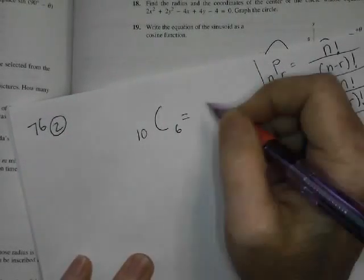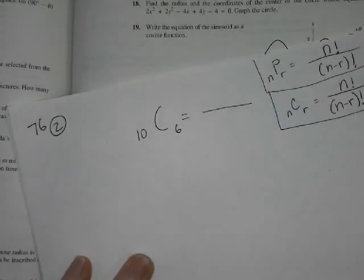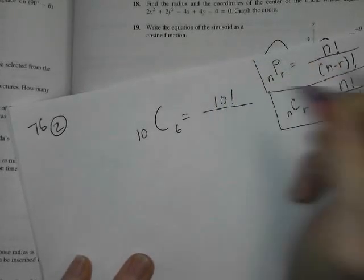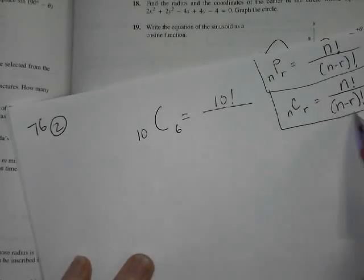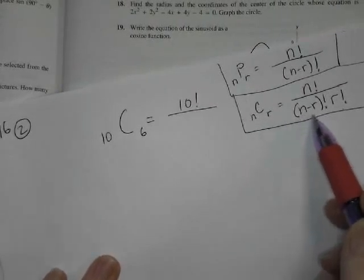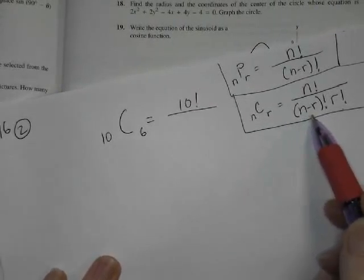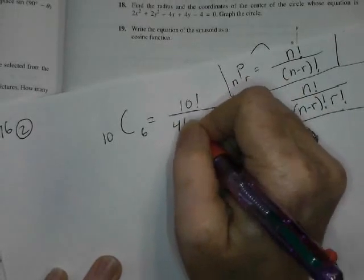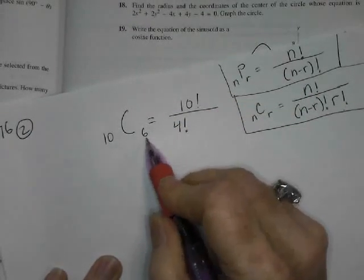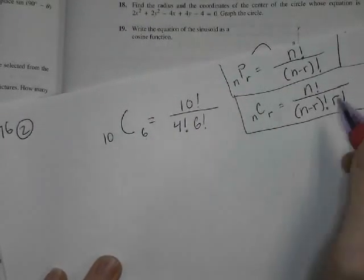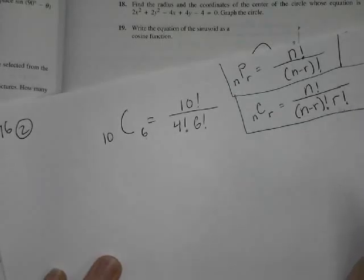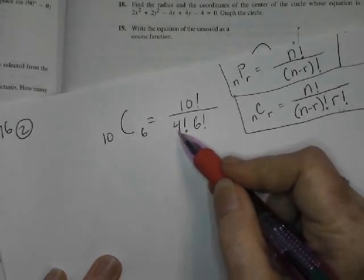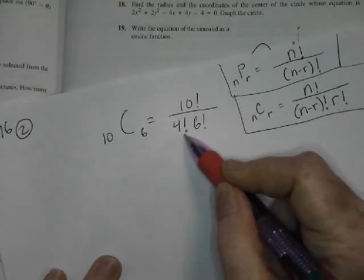So I'm going to use my formula here. n is 10, so it's 10 factorial. And then 10 minus 6, because it's n minus r. 10 minus 6 gives me 4 factorial. And then that's r, so that's 6 factorial, from the r factorial. That's n minus r. I just did it in my mind.